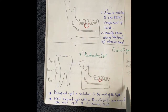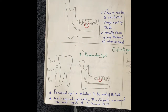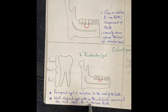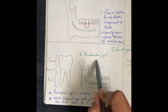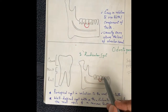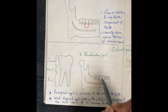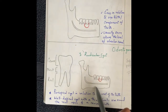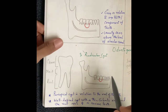The radicular cyst is a well-defined cyst with a thin sclerotic rim around the root apex of a carious tooth. When you see a radicular cyst, there is an associated carious tooth — look near the root and there will be a well-defined cyst with a thin sclerotic rim around the root apex.